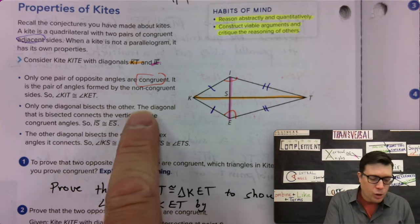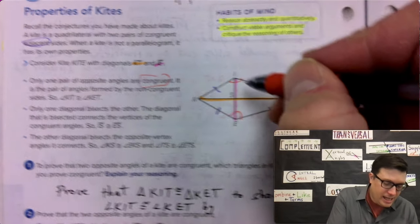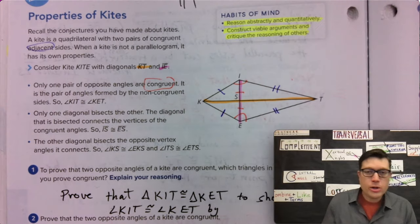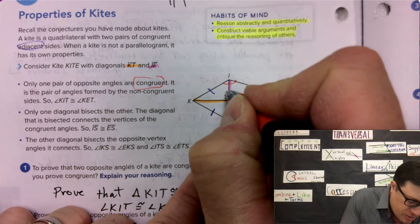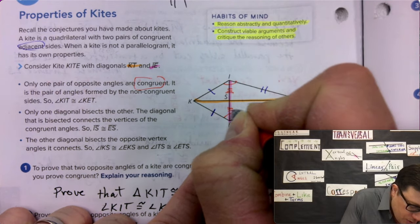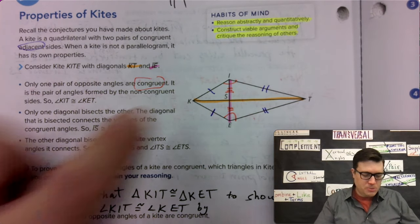Only one diagonal bisects the other. In fact, it is the diagonal connecting those congruent angles. So, and I guess it deserves three spikes. One, two, three. One, two, three. We can't use a one spike or a two spike.